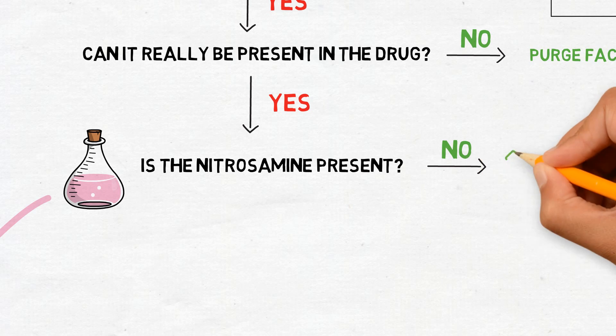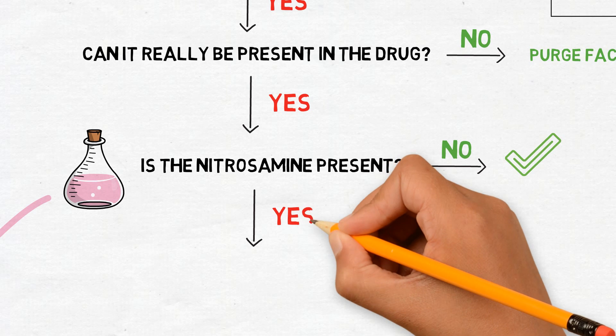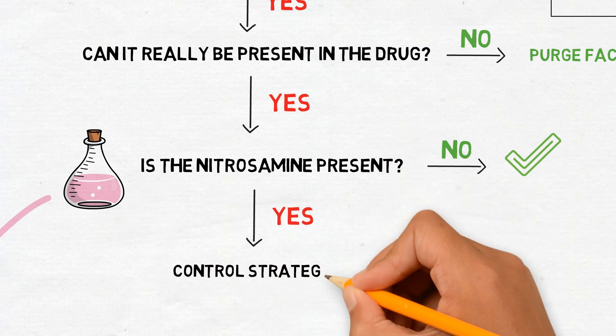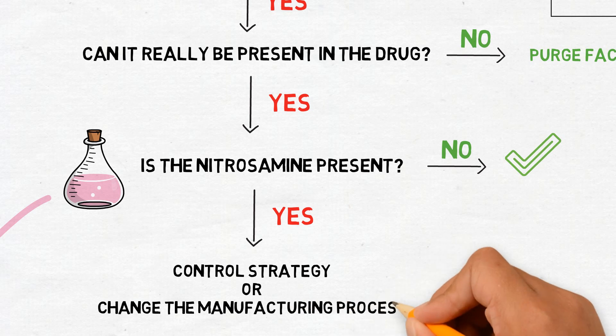After the conclusion of this stage, the company must evaluate if it is necessary to establish a control strategy or perform any change in the manufacturing process in order to eliminate any risk that may be confirmed.